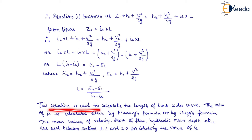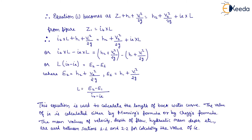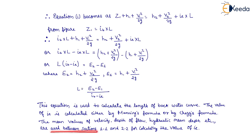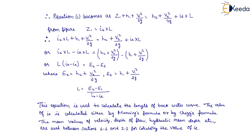This equation is used to calculate the length of backwater curve. The value of IE is calculated either by Manning's formula or by Chezy's formula. The mean values of velocity, depth of flow, hydraulic mean depth, etc., are used between sections 1-1 and 2-2 for calculating the values of IE. That is all about the backwater curve and afflux. Thank you very much, students.